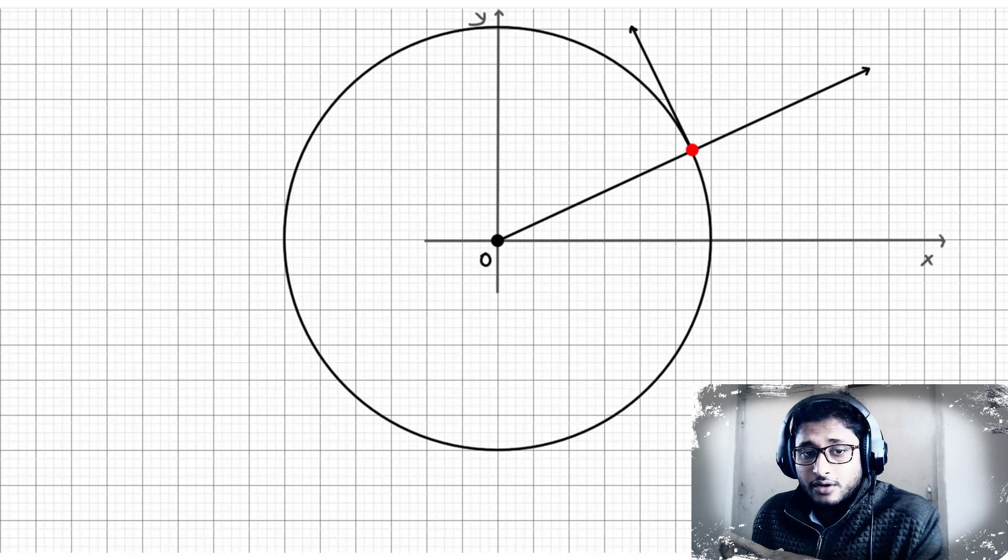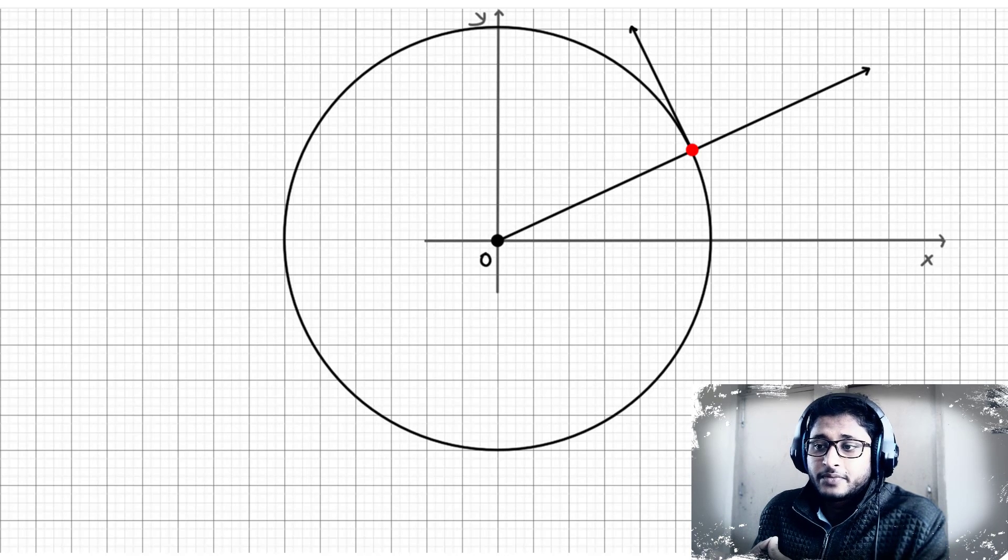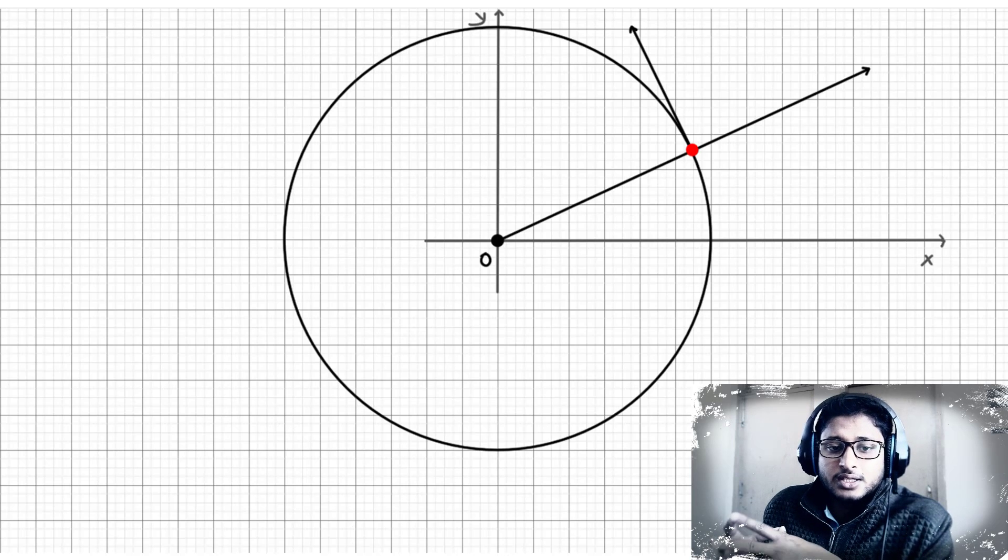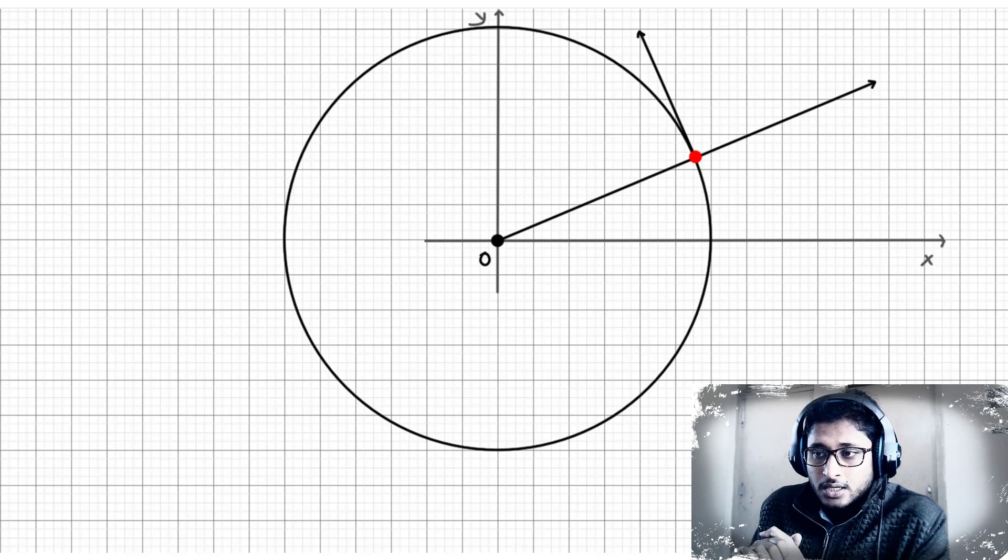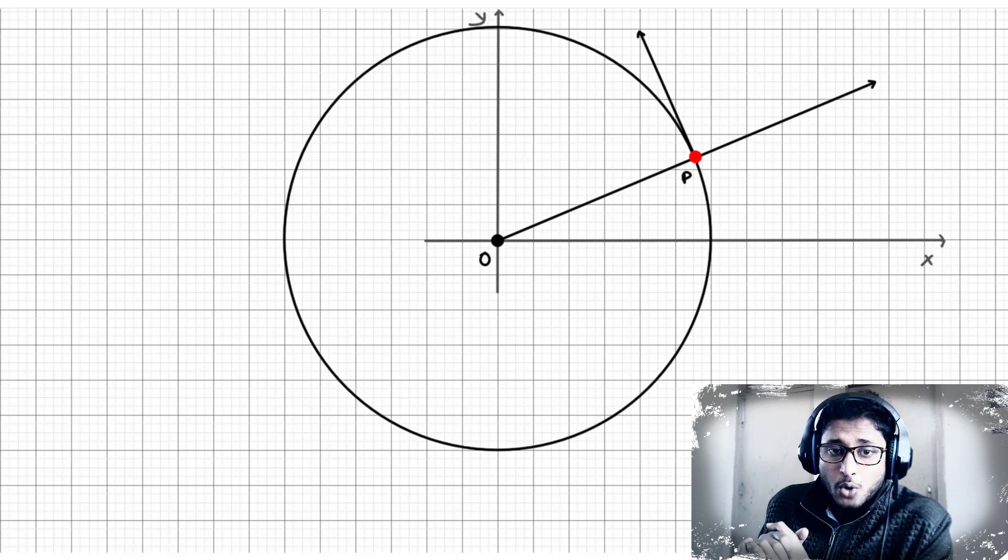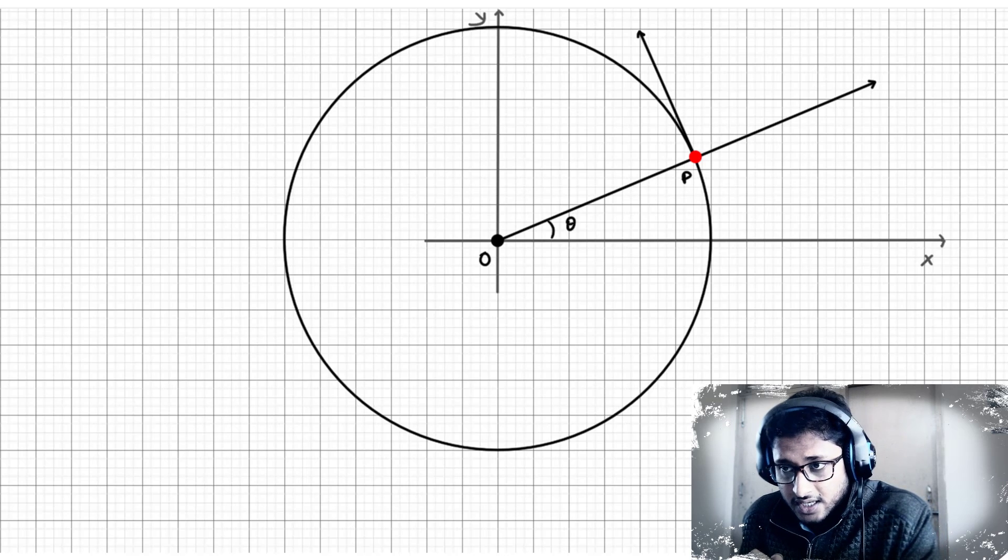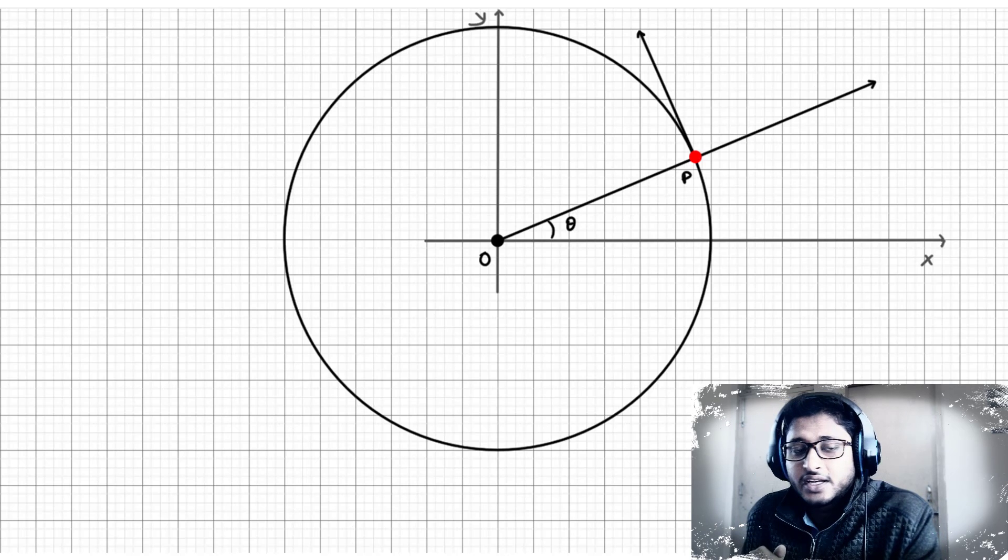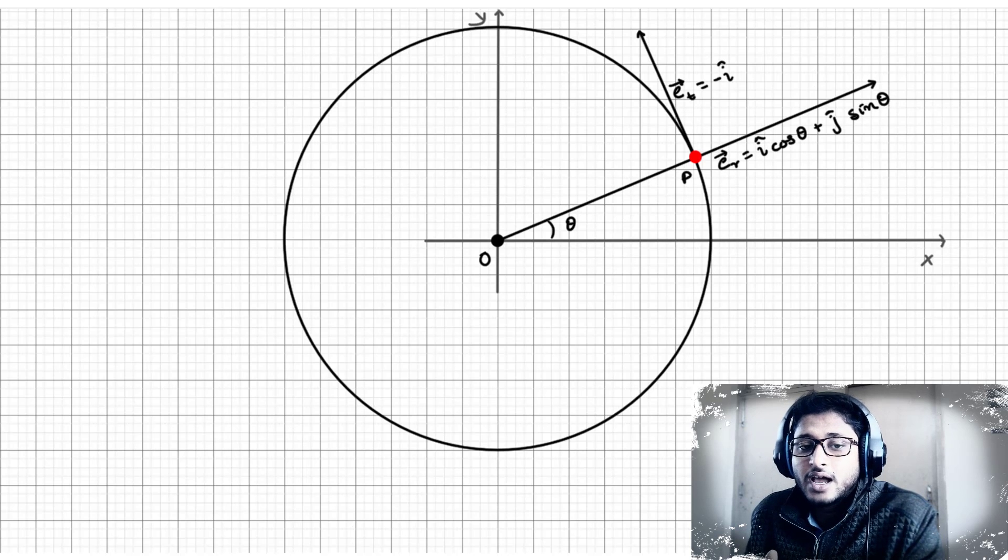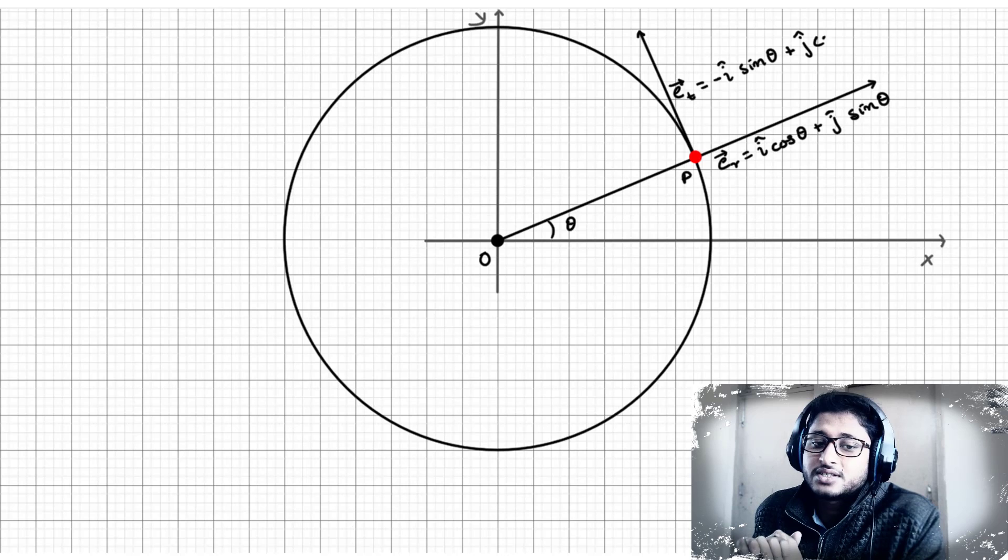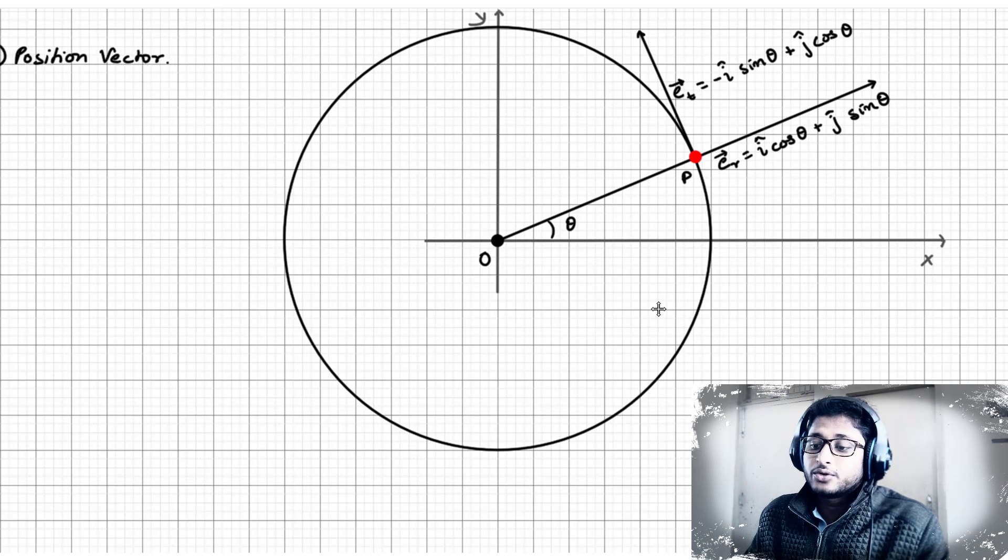For ease, we took O as the origin of the XY plane in consideration. So we can simply say that the particle was going round and round about the origin. We assumed that the particle was at position P, where OP was making an angle theta with the x-axis. So we got the radial unit vector e_r as i cos theta plus j sin theta, and the tangential unit vector e_t as minus i sin theta plus j cos theta.